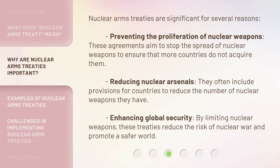Nuclear arms treaties are significant for several reasons. First, preventing the proliferation of nuclear weapons: these agreements aim to stop the spread of nuclear weapons to ensure that more countries do not acquire them. Second, reducing nuclear arsenals: they often include provisions for countries to reduce the number of nuclear weapons they have. Third, enhancing global security: by limiting nuclear weapons, these treaties reduce the risk of nuclear war and promote a safer world.